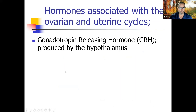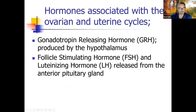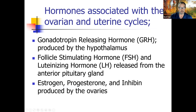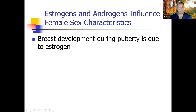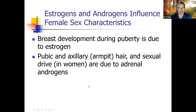Hormones associated with the ovarian and uterine cycles: GRH is produced by the hypothalamus, which signals the anterior pituitary to release FSH and LH. These go to the ovaries and cause estrogen, progesterone, and inhibin to be produced. Breast development during puberty is due to estrogen. Pubic and axillary hair and sexual drive in women are due to adrenal androgens — hormones normally associated with men. That is a potential test question.